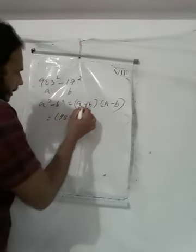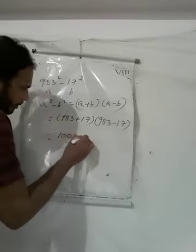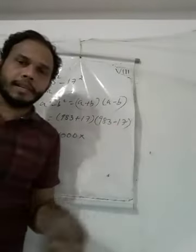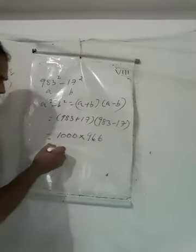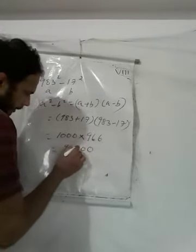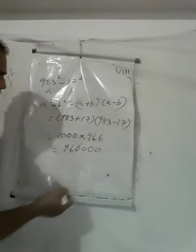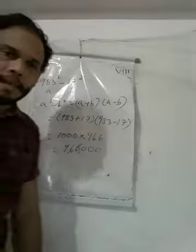So A plus B into A minus B equals 983 plus 17, into 983 minus 17. 983 plus 17 gives us 1000. And 983 minus 17 gives us 966. So 1000 into 966 equals 9,66,000.